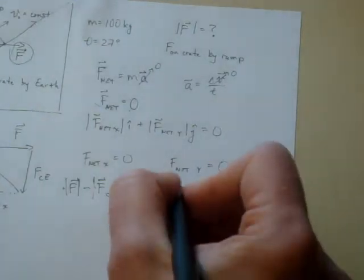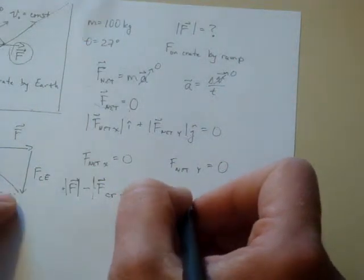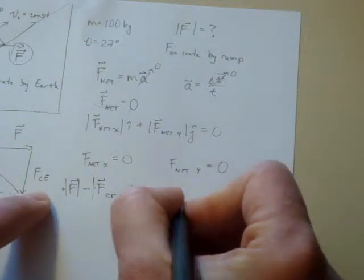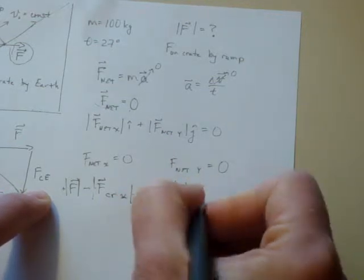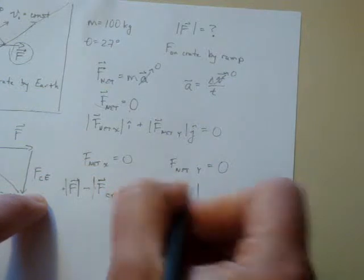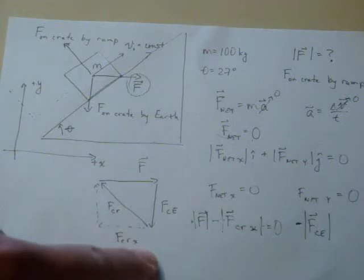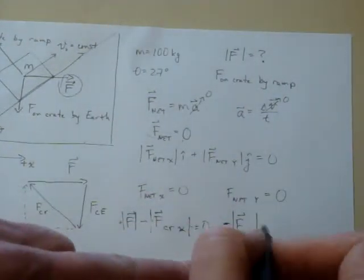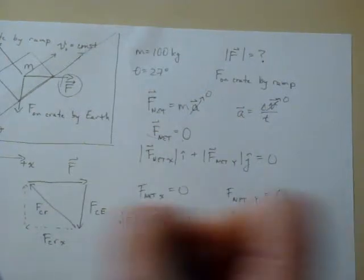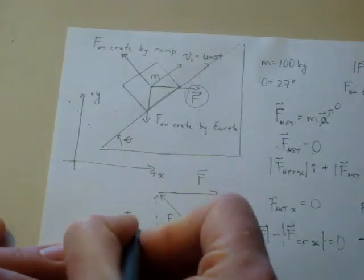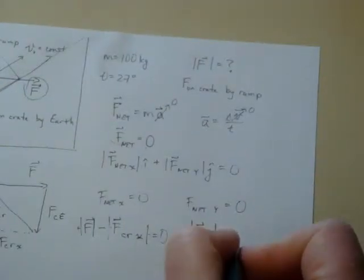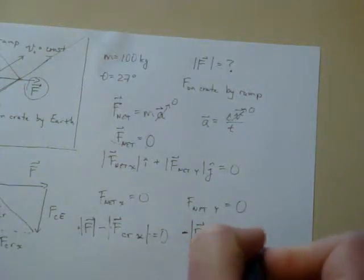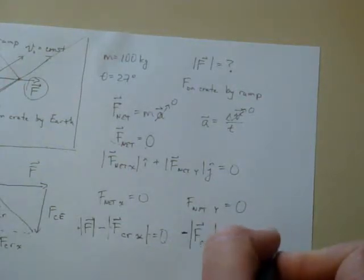Similarly, the net force in the y direction: we take the force on the crate by the earth, and since it is vertically downward and we chose positive y to be up, we bring a negative sign out in front of it. Then we add the y component of the force on the crate by the ramp. That must also equal zero.